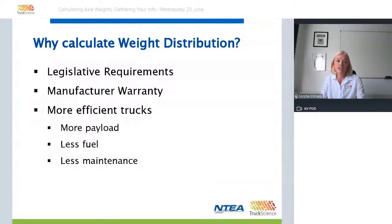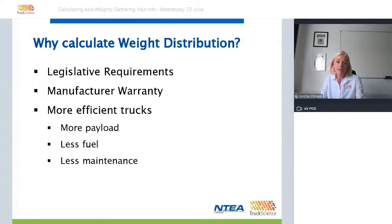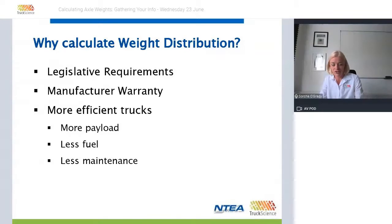Calculating weight distribution is an essential task in optimal work truck design for many reasons. States, cities, and counties define limits for how much a truck can weigh and how much of that weight can be borne by each axle. These limits are normally based on the number of axles on the truck, and failure to comply may result in prosecution and/or fines. Overloading a truck may also void the manufacturer warranty. Calculating weight distribution also allows us to design more efficient trucks — trucks that can carry more payload, use less fuel, and require less maintenance.